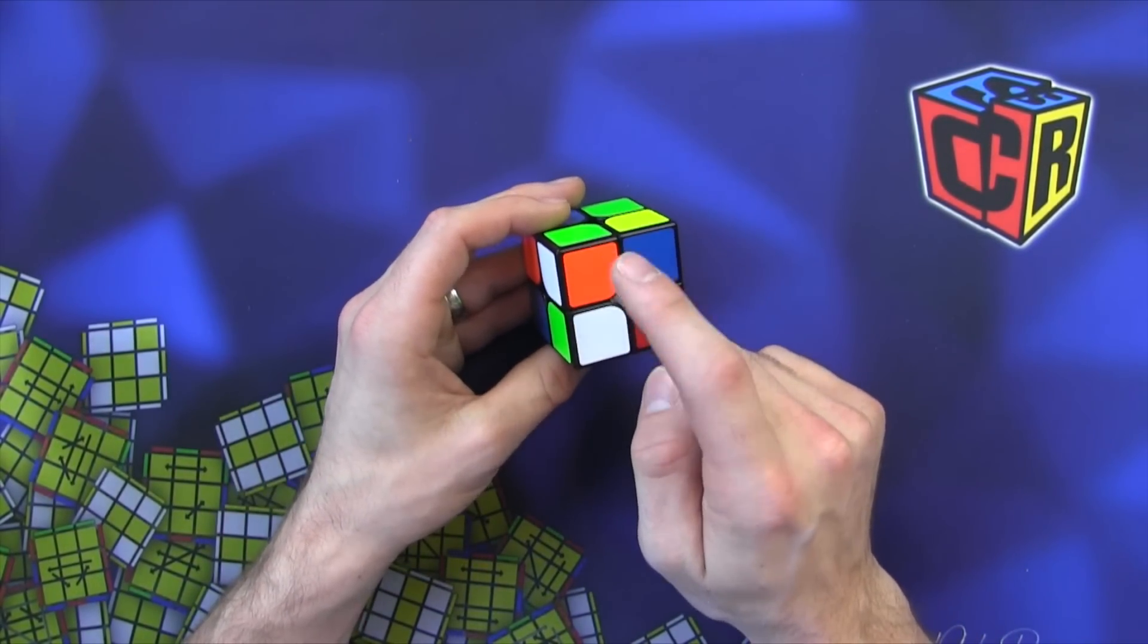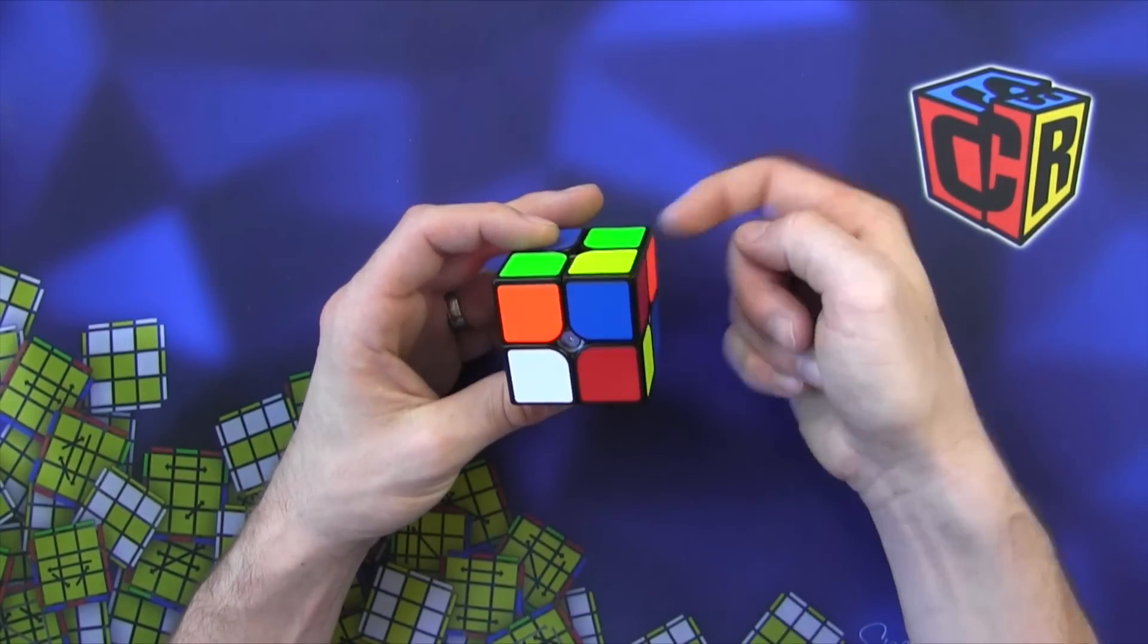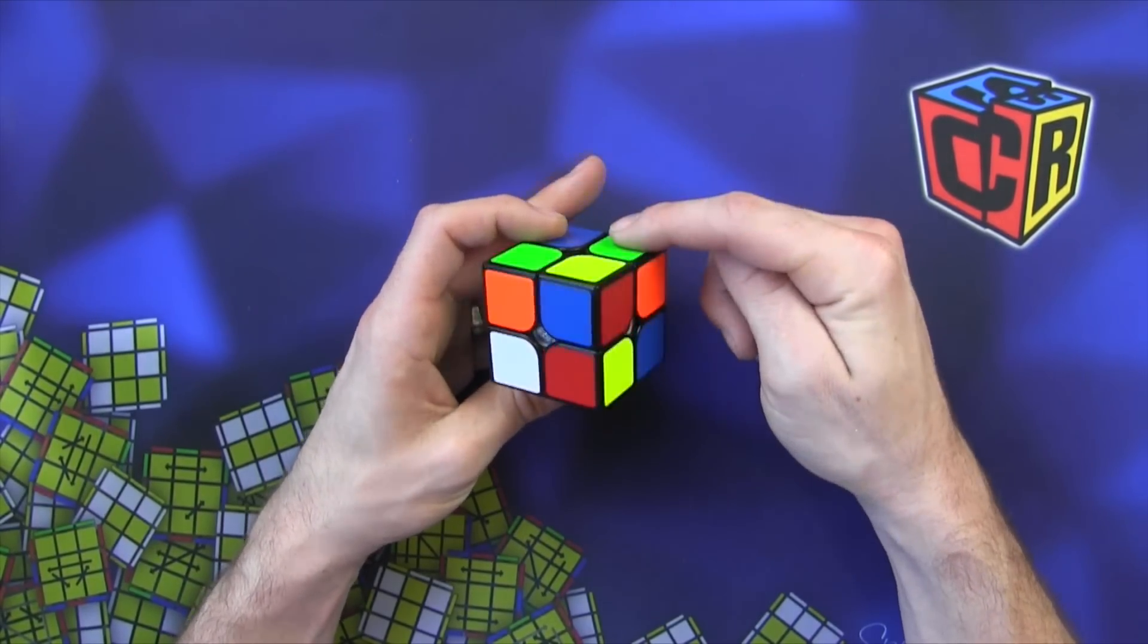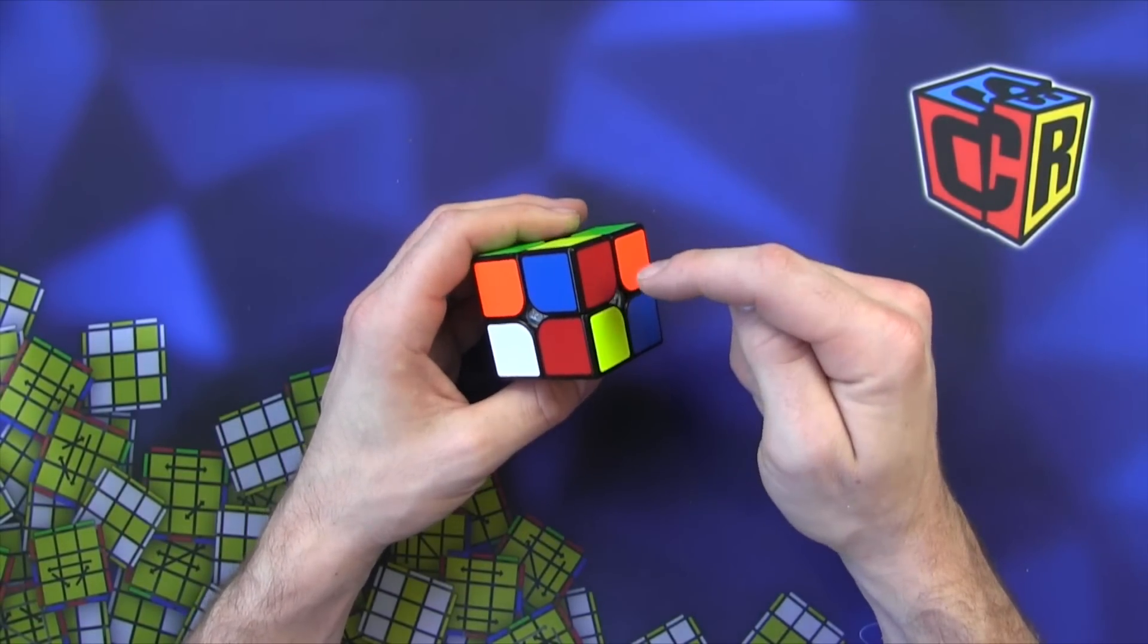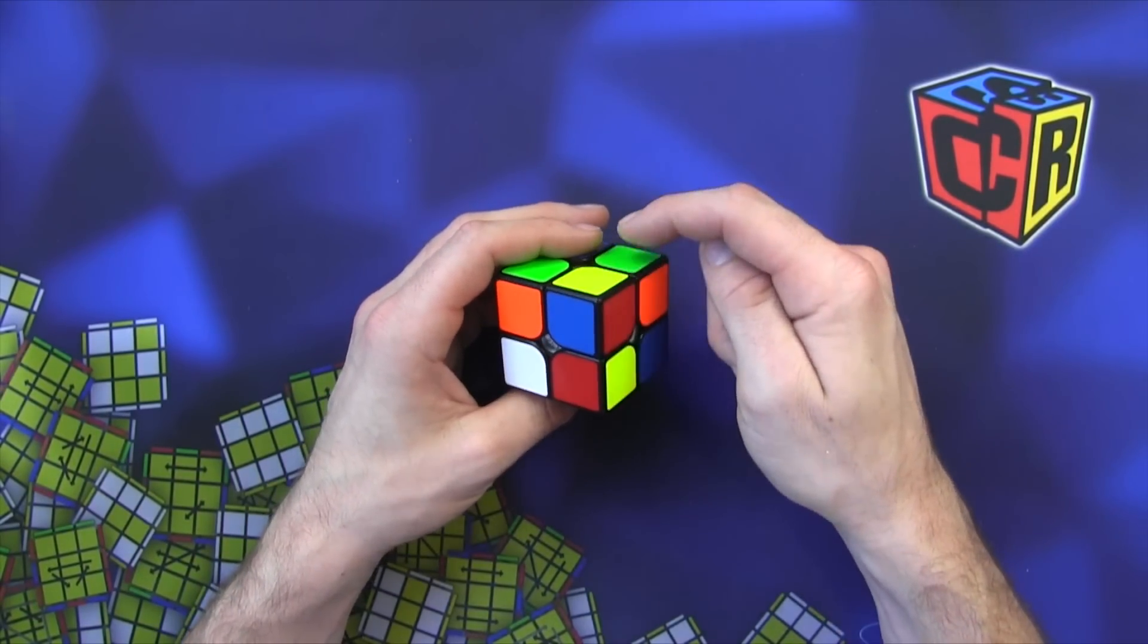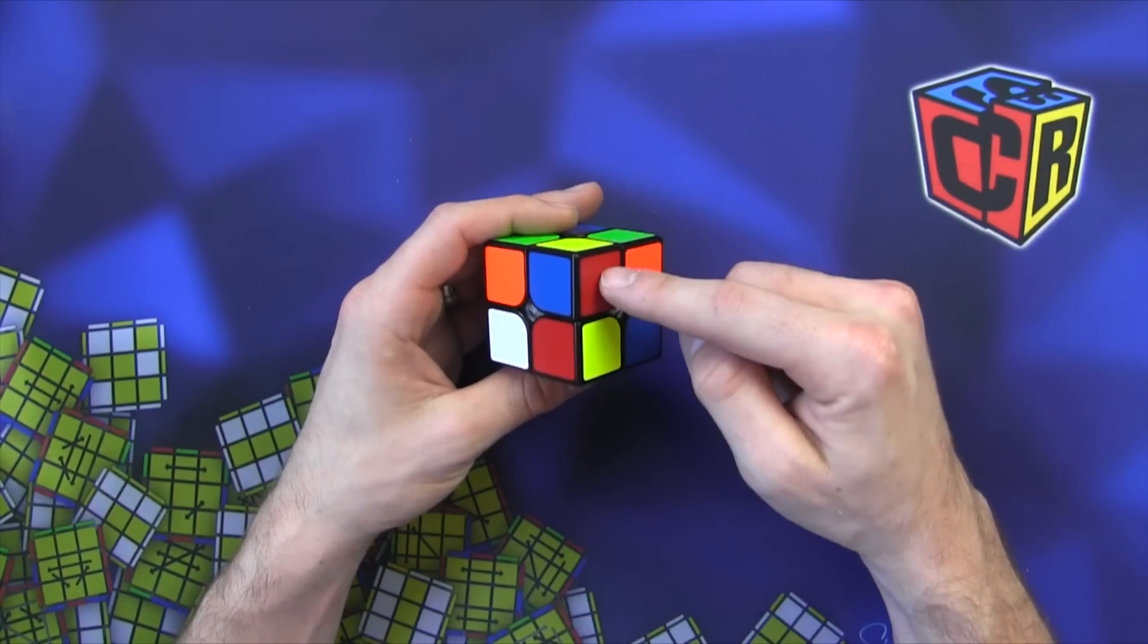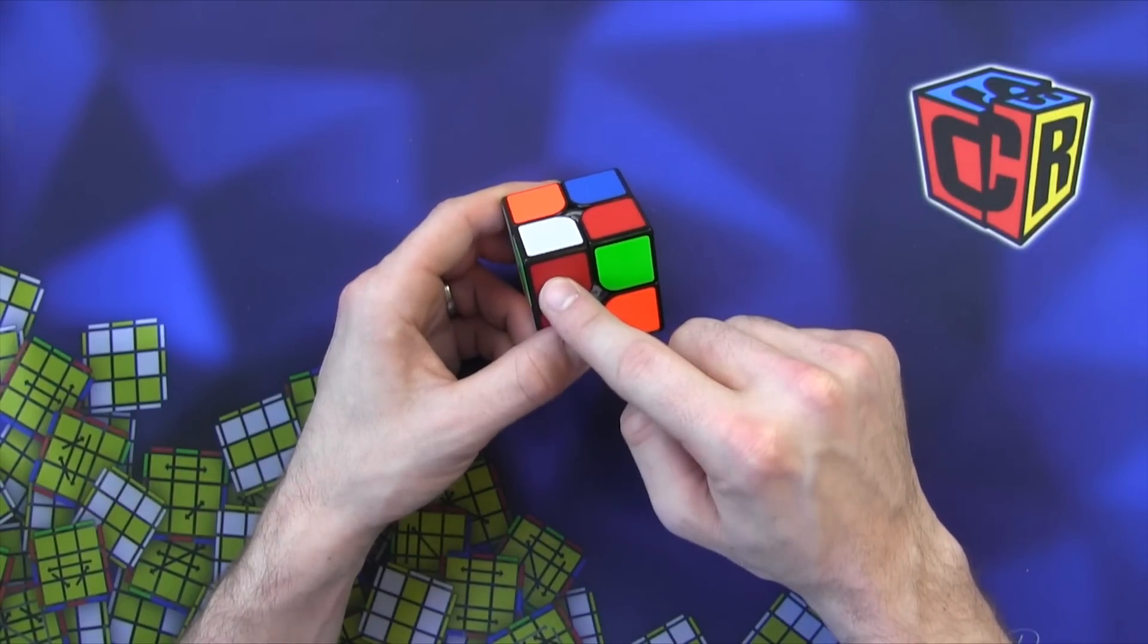So that orange needs to go right here because that's where the orange green white sticker is. So that's the letter P. This green needs to go right here where J is because that again green yellow orange. So we have P, J. Then this red needs to go right here so that's E.